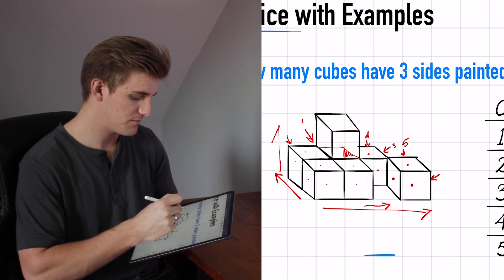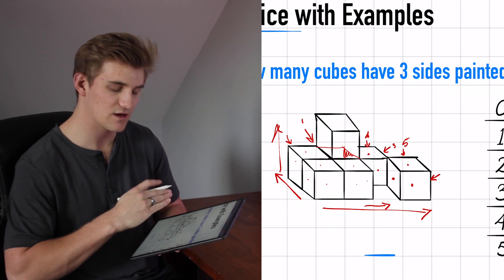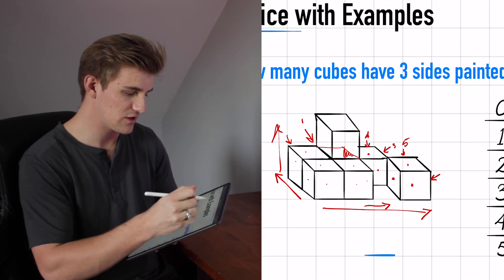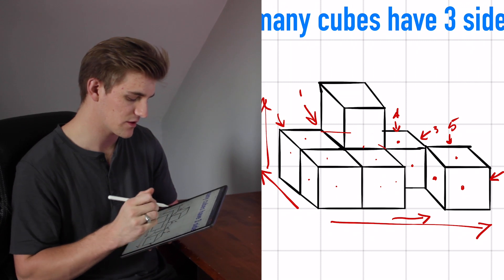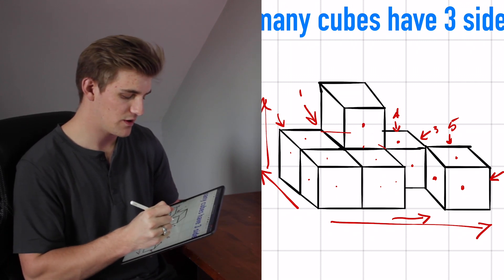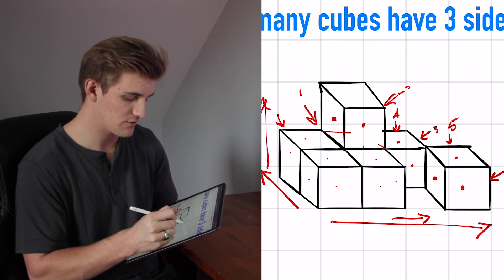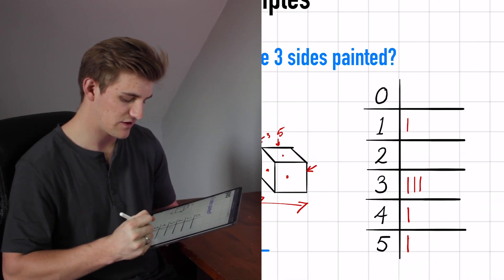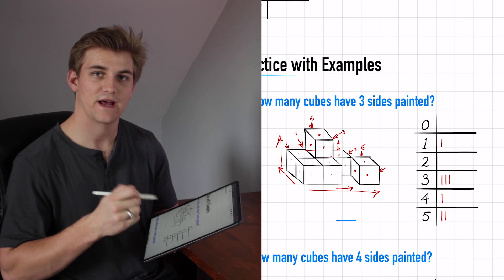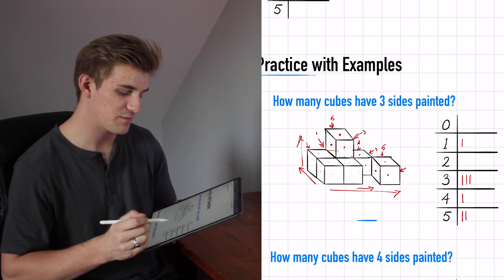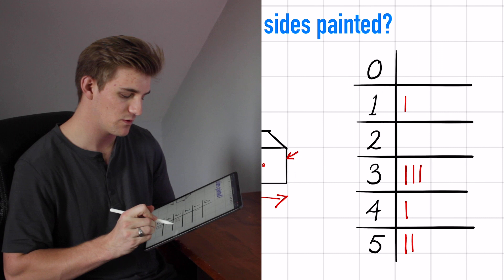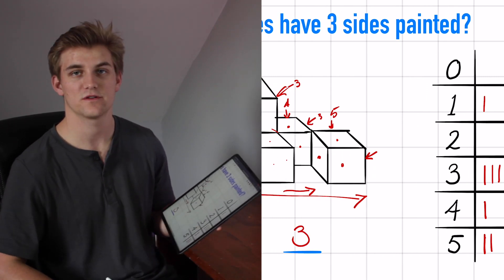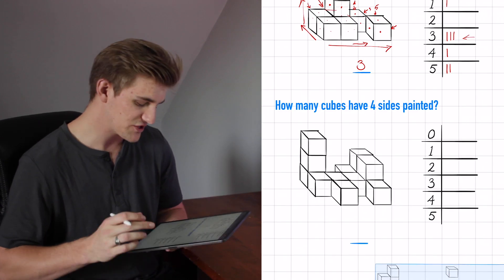Then we go up to the next row. Once we finish one row on the bottom, we go up. This free-floating cube on the upper level has one, two, three on the right, four, five on the back — another tick for five. The question asked how many cubes have three sides painted. We reference our table and see that three cubes have three sides painted. Our answer is three.